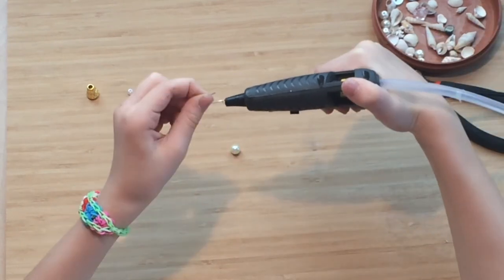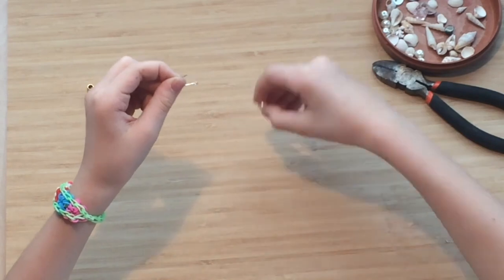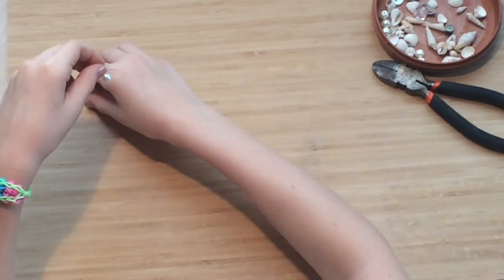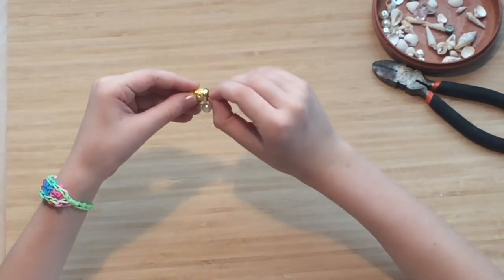Glue the big bead on one side. Then add the egglet and then also glue the smaller bead.